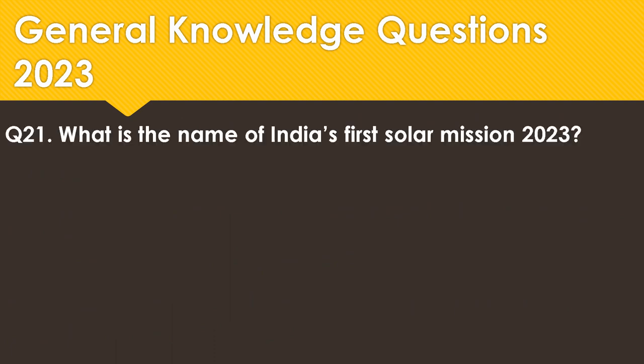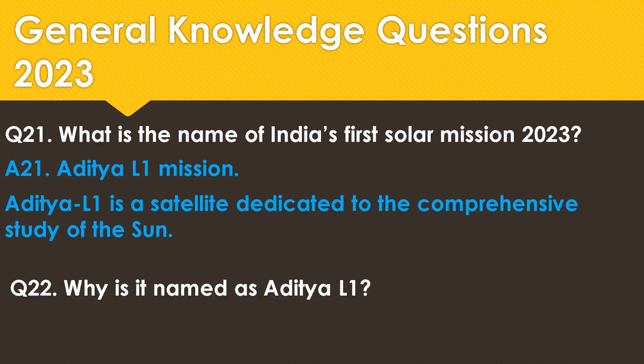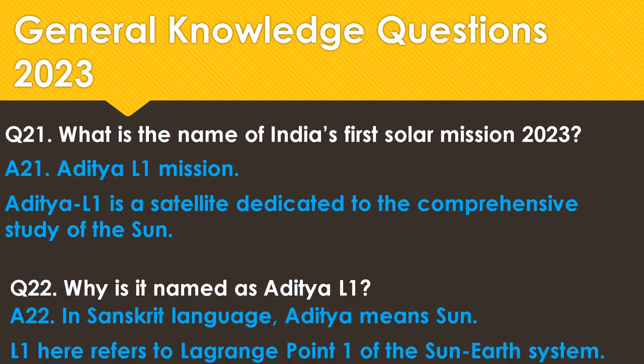What is the name of India's first solar mission in 2023? The right answer is Aditya L1 mission. Aditya L1 is a satellite dedicated to the comprehensive study of the Sun. Why is it named Aditya L1? In Sanskrit, 'Aditya' means sun, and 'L1' refers to Lagrange Point 1 of the Sun-Earth system.